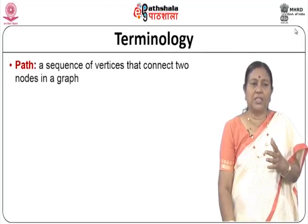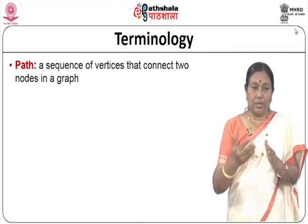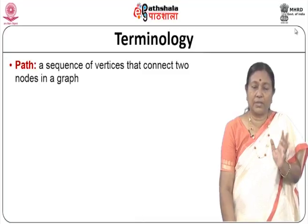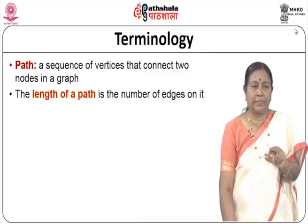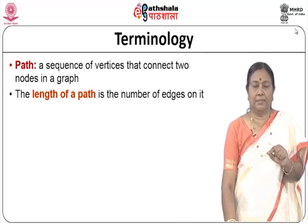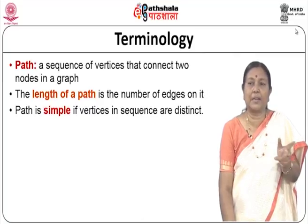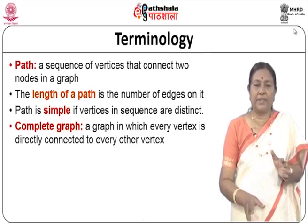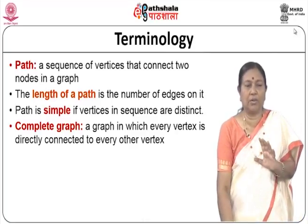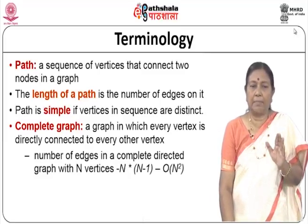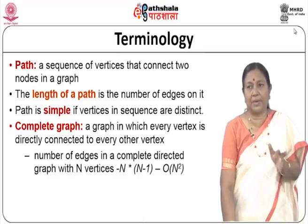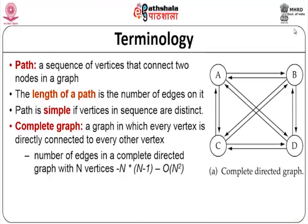A path is a sequence of vertices or edges that connect two nodes in a graph. The length of a path is the number of edges in it, and a path is simple if the vertices in the sequence are distinct. A complete graph is one where every vertex is directly connected to every other vertex. The number of edges in a complete directed graph with n vertices is approximately of the order of n squared — for 4 vertices, there are 16 edges.